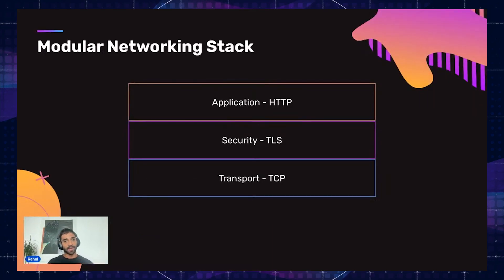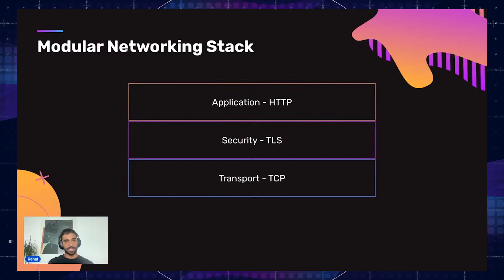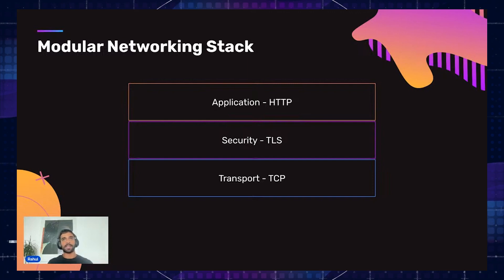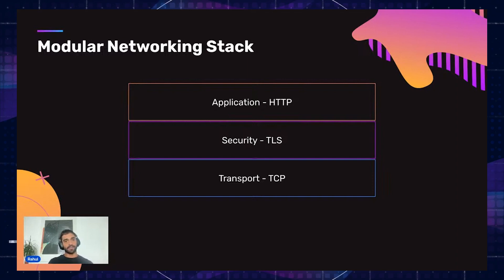Let's go back to the internet and look at how the networking stack looks in this modular vision. The networking stack is already modular: you have a transport layer, which is TCP; a security layer, which is TLS; and then an application layer. The application layer is really what allows everything to be composable — it allows developers to build new apps, allows content to be linked to each other, and allows users to just go into their browser and start browsing without dealing with any of the lower layers.